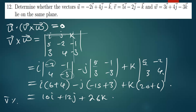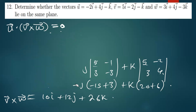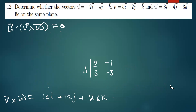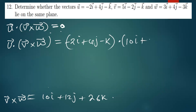This vector represents v cross w. Now we need to find the dot product of u with what we found. If the answer is zero, the three vectors lie on the same plane; if not zero, they do not. So let us find u dot (v cross w). Our u is negative 2i plus 4j minus k, and we are dotting this with 10i + 12j + 26k.